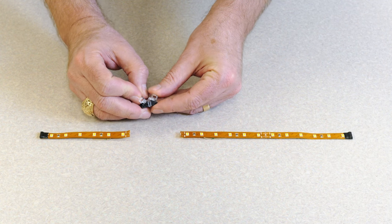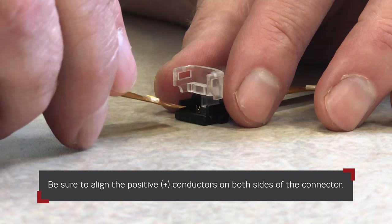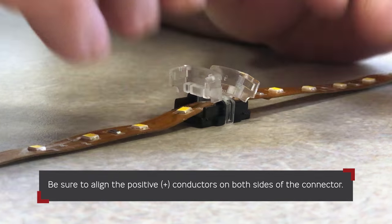First, lift up the clear plastic tabs and slide your 10mm wide single color or RGB LED striplight into the connector as far as you can on either side. Make sure it's on top of the grooves.